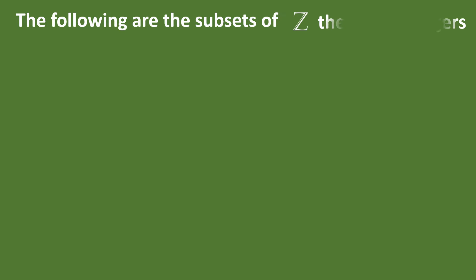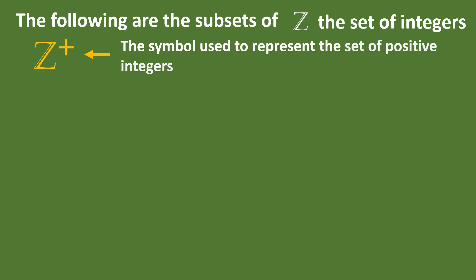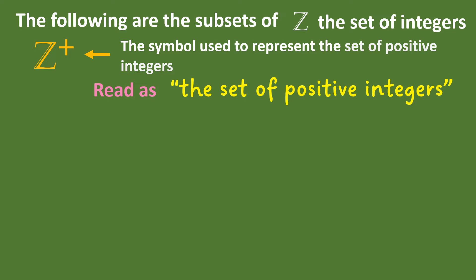The following are the subsets of the set of integers. The Z with a plus on the upper right side is the symbol used to represent the set of positive integers, and it is read as the set of positive integers. The positive integers include 1, 2, 3, 4, up to positive infinity.